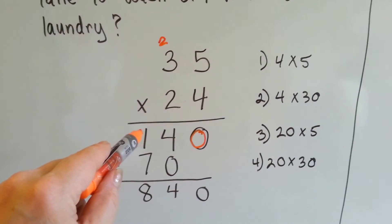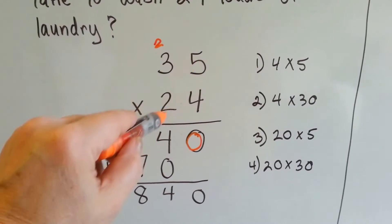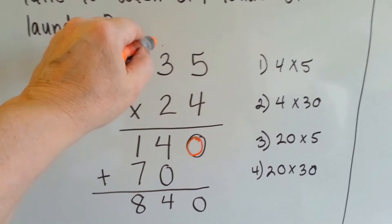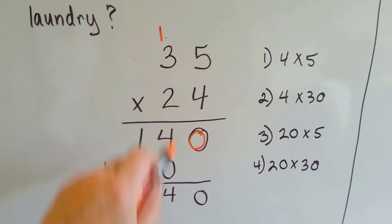So now we're going to multiply this 20 by the 5. 2 times 5 is 10. We don't need that carryover anymore, so we get rid of it. 2 times 5 is 10. We carry over the 1. And we put the 0 down in the tens place.